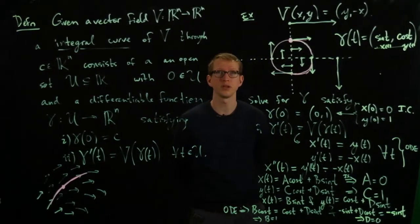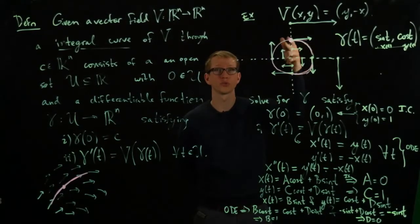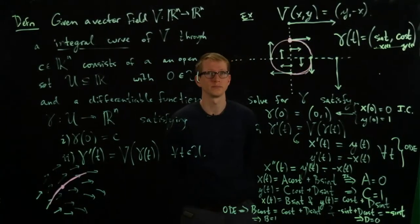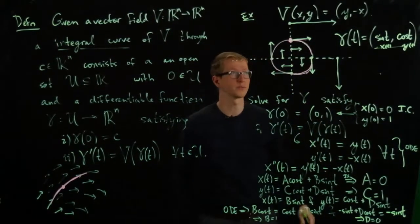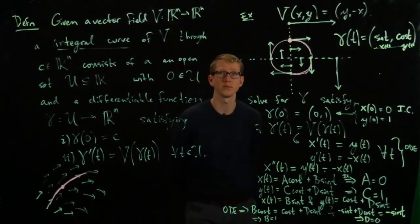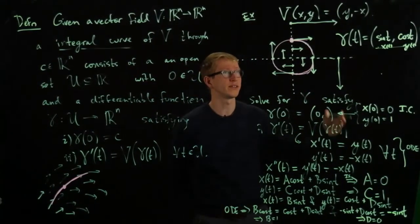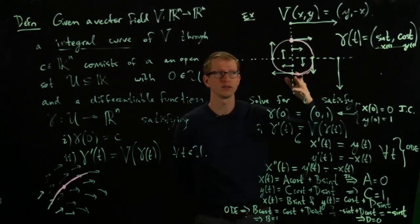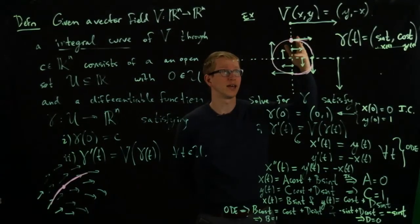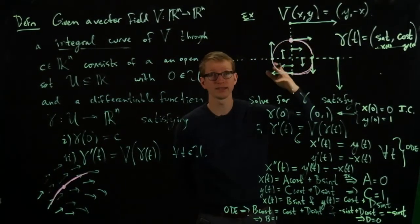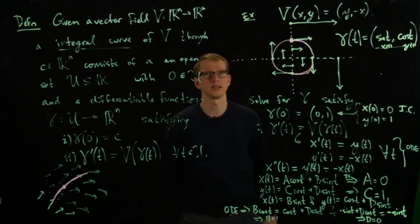And so this is an example of an integral curve of this vector field through the point (0,1). And you can look at all integral curves of this vector field, and they're all going to be concentric circles. And one of the important things about these integral curves is that they are periodic. Which means that there exists some time, capital T, for example, at which if I evaluate gamma at T and then I add that time T, I get back to where I started. So it's periodic in that sense.